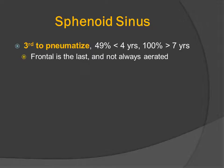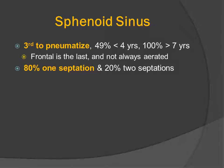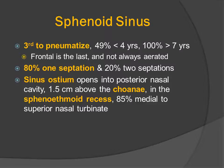The sphenoid sinus is the third to pneumatize. The frontal is usually the last and does not always become aerated. About 80% of the sphenoid will have a septation, and 20% will have two septations. The opening of the sphenoid sinus is into the posterior nasal cavity, just above the choana, in the sphenoethmoidal recess,